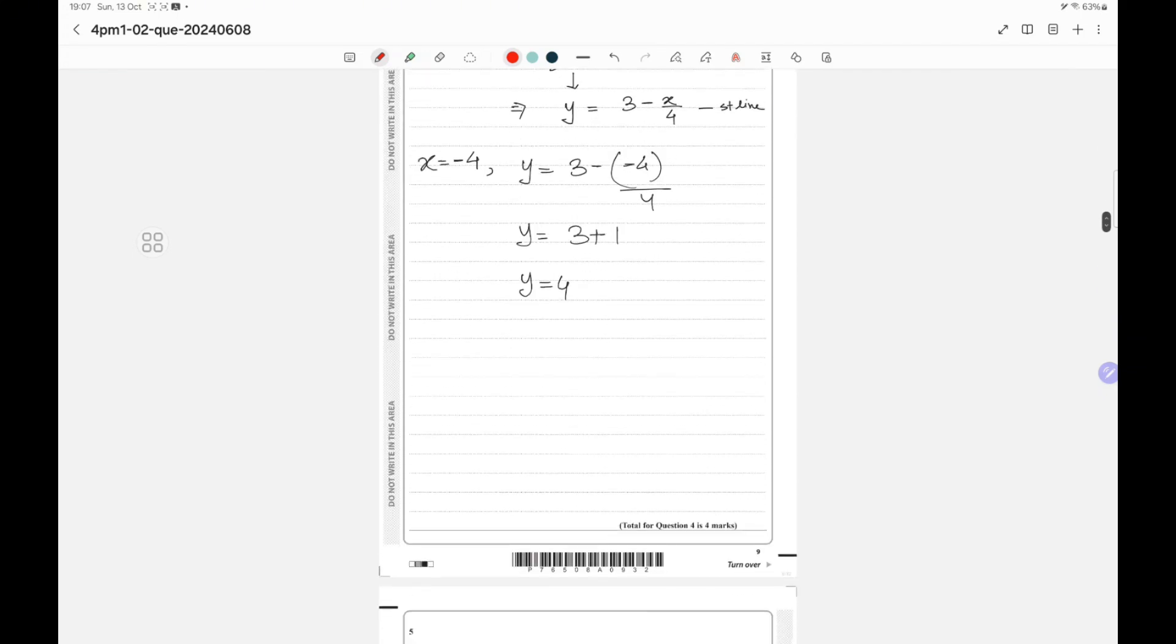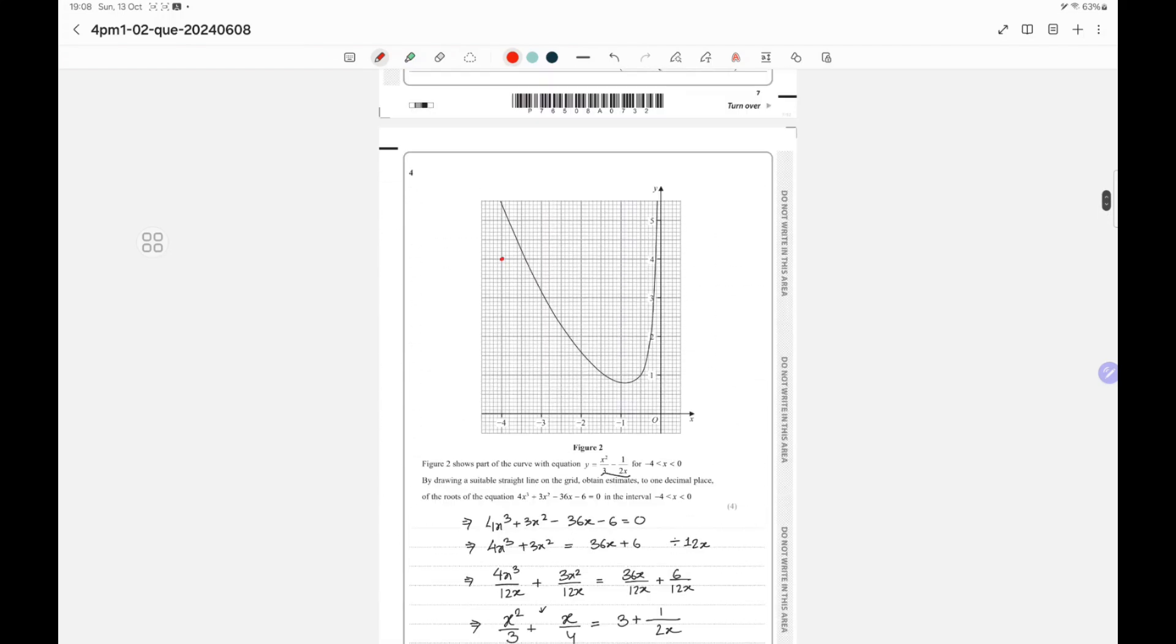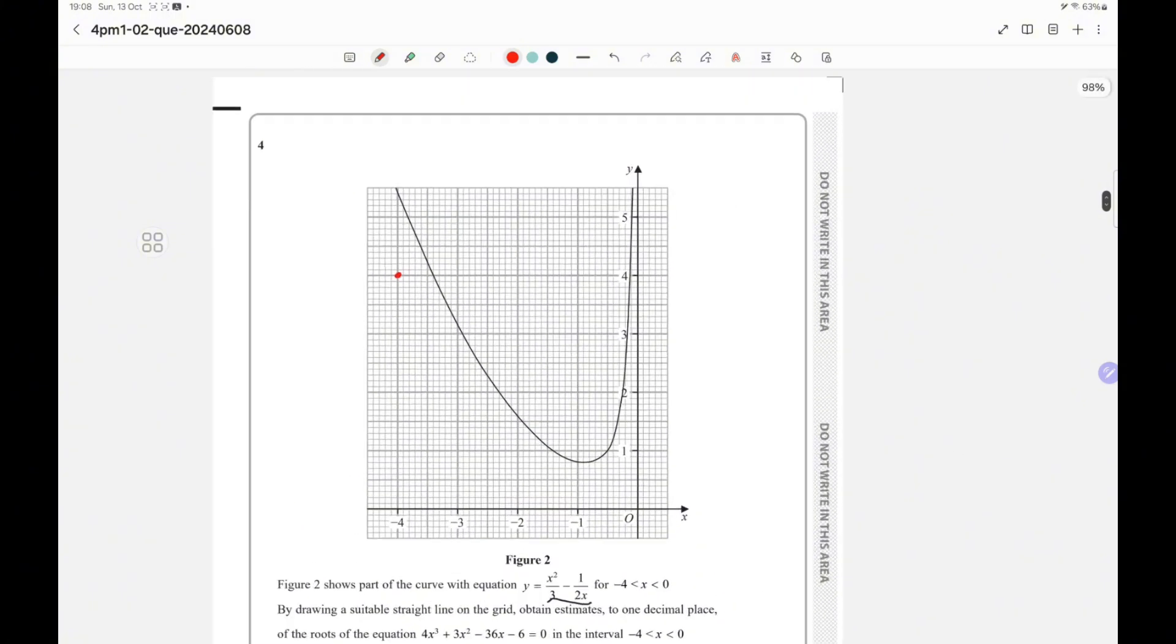Now let's put the value of x equals 0. If you put the value of x equals 0, we get y value as 3 minus 0 by 4, so y equals 3. When x is 0, y equals 3, which is somewhere over here.